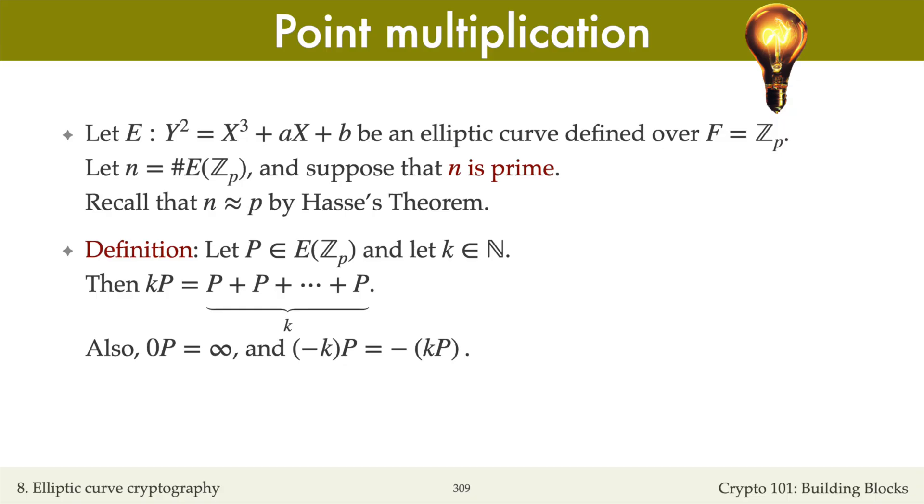We have the following definition. Let E be an elliptic curve defined over the integers modulo p. And suppose that the number n of points on the curve is prime. Let P be any point on the elliptic curve, and let k be a positive integer.